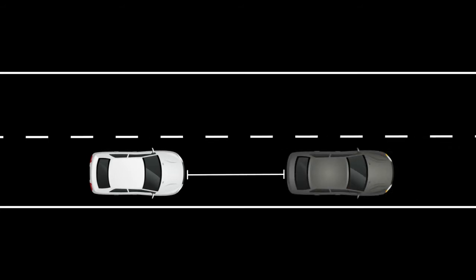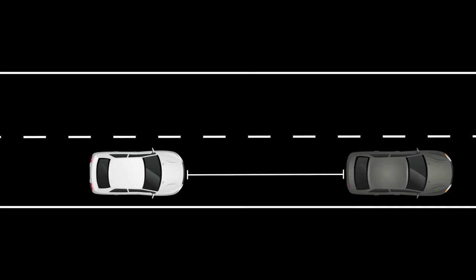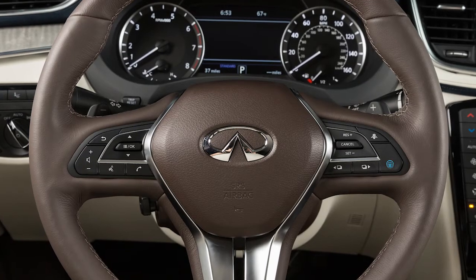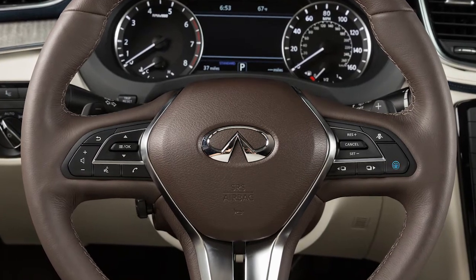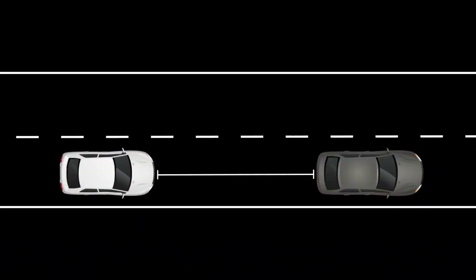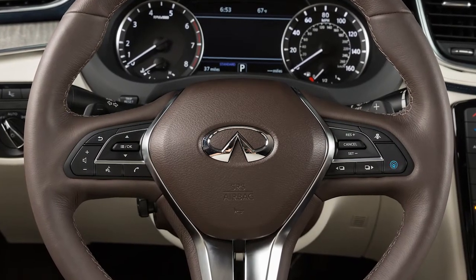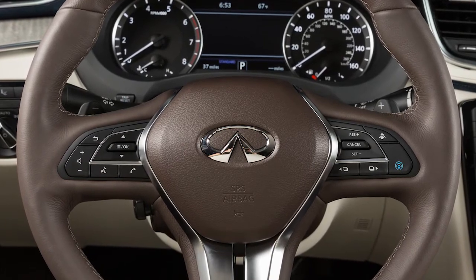The distance to the vehicle ahead will change according to the vehicle speed. The higher the vehicle speed, the longer the distance. If the vehicle in front is traveling slower than your set speed, the ICC will automatically match that vehicle's speed. Once the road ahead clears, the ICC will resume your set speed automatically.